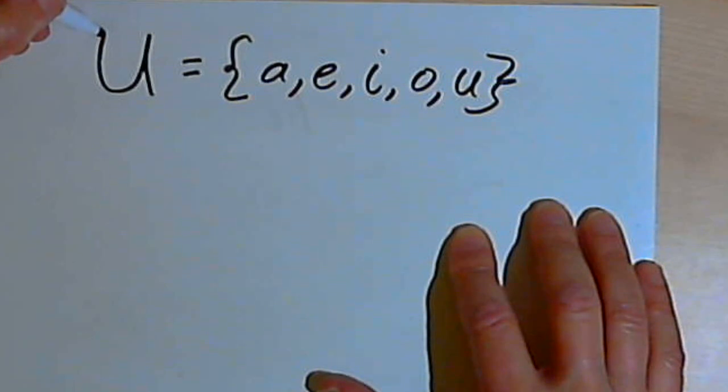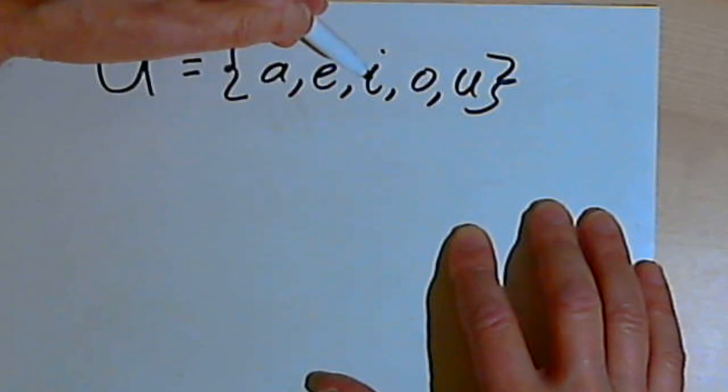I'll designate the universal set, usually with a capital U, and then I'm going to say that U equals the set containing A, E, I, O, and U.